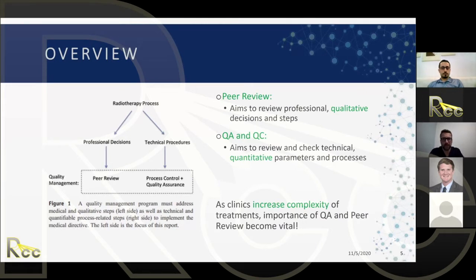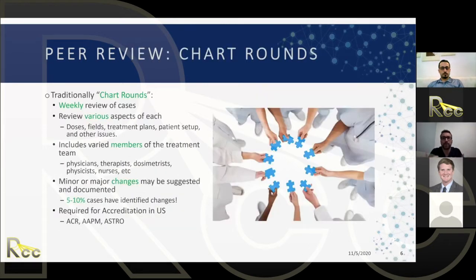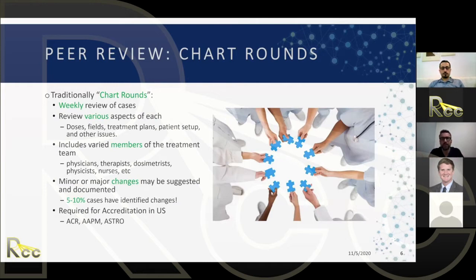Traditionally, peer review breaks down into chart rounds — a weekly review of cases within the department, usually new cases. You review various aspects like dose, fields, treatment plan, patient setup, and other issues. It includes physicians, physicists, dosimetrists, planners, and sometimes nurses. Cases are discussed; most look good, but minor or major changes can be suggested. Literature shows about five to ten percent of cases will need some change — one in ten cases — which is pretty substantial.